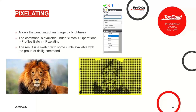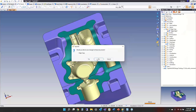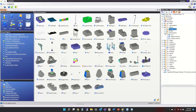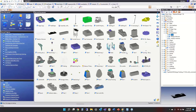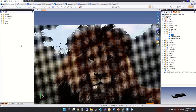Next is a brand new command called Pixelated. It was a request to create a way to turn a photo into a pixelated object so you can manufacture it and have it still look like the photo. Let me show you — going back to TopSolid, I'll close this and go down to pixelation, choosing the lion image.